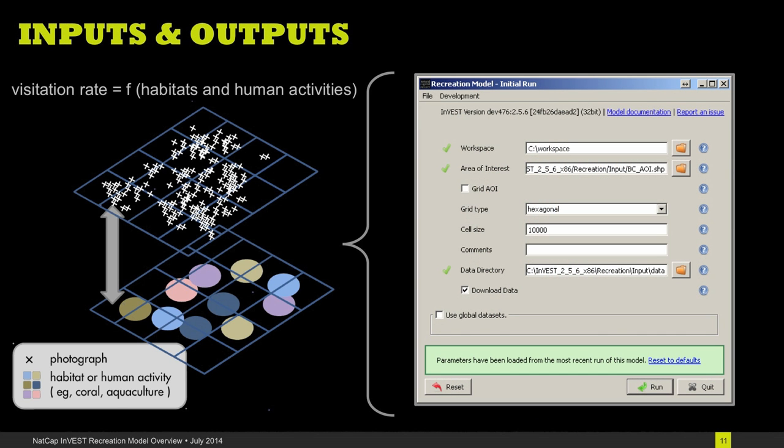The InVEST model will present you with a screen where you can specify the grid cell size, as well as your input data layers—the predictors that you want to use to estimate the relationships or the effects on visitation—and you have to specify an area of interest, the region that you want to study. This tool will output shapefiles, maps of expected visitation, along with the effect of each predictor that you include in your model.